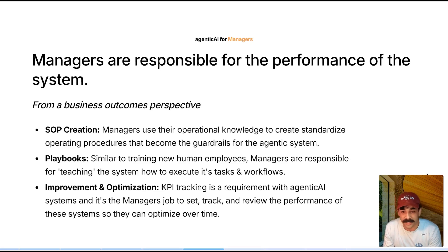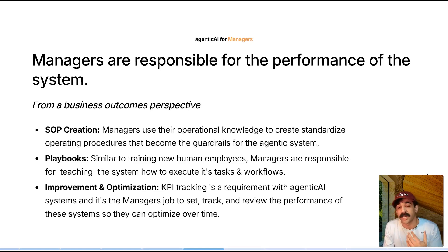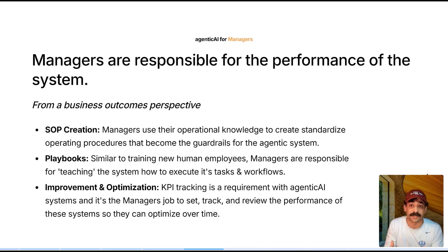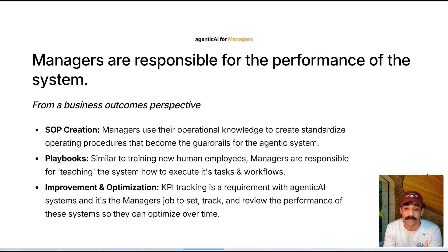Improvement and optimization: the systems are judged based on their ability to meet certain KPIs. If they're not meeting KPIs, you have to improve over time — juice up the SOP, change some plays in the playbook. It's the manager's job to review results and performance, then optimize, just like it is with humans today. Not much will change except we're managing agentic systems rather than humans.